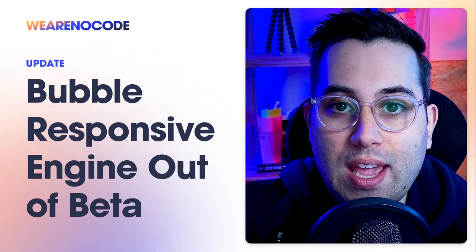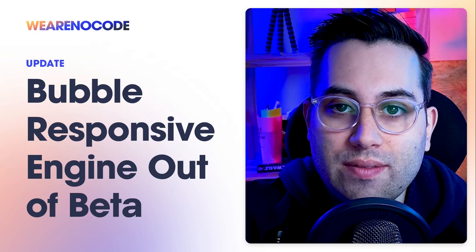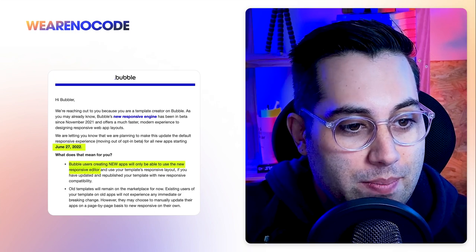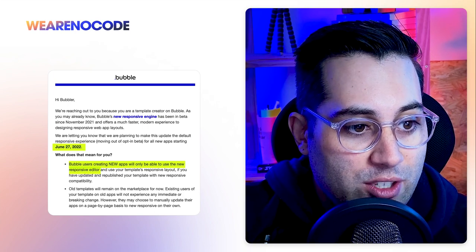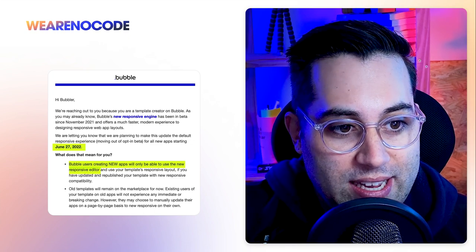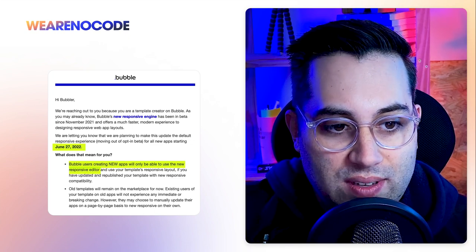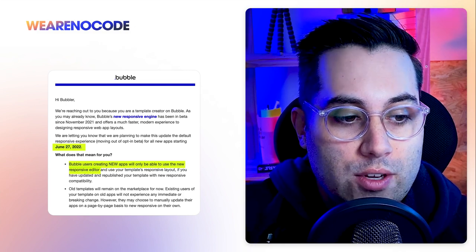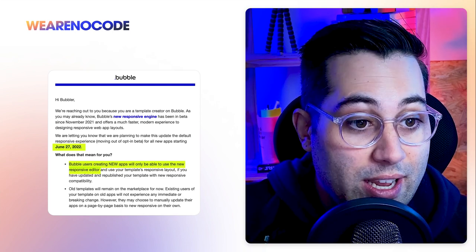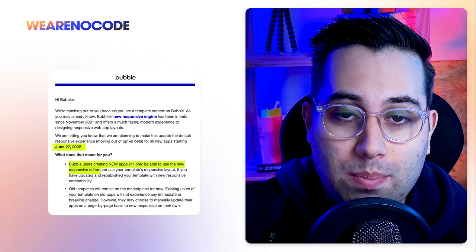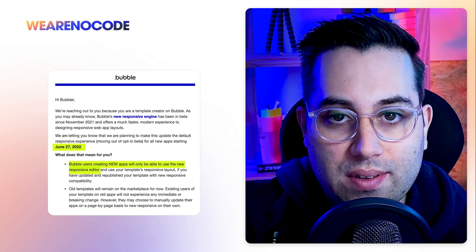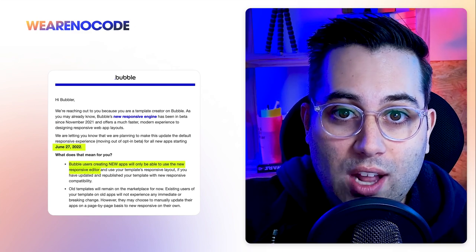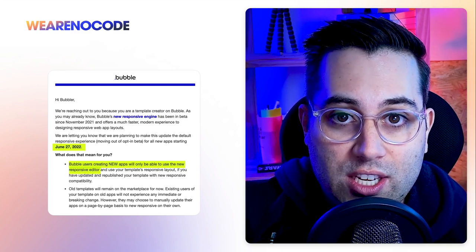All the new apps you create will be created using the new responsive engine by default. I received this email from Bubble, and in this email they are talking about this change. So by June 27th, they will be replacing the old version with the new responsive engine. And when you create new apps, you will be only able to use the new responsive editor or the new responsive engine. So if you have a Bubble application that's not currently using the responsive engine, at some point it might be good for you to update that. But this change will not affect the existing apps you have — it will only change for new apps.